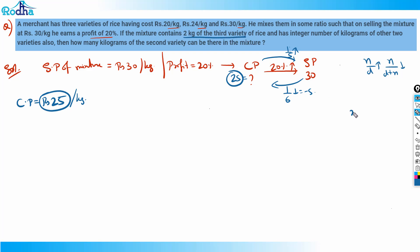and z kg of third variety. That z value is already given as two. I'll apply the formula of weighted average. 20 rupees at x per kg is 20 into x, 24 rupees per kg at y kg is 24 into y, and 30 rupees at 2 per kg is 30 into 2, which is 60.